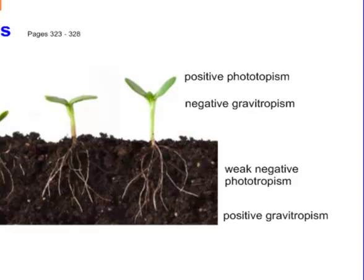The names we have for these: growing towards the light is called positive phototropism — 'photo' of course being the word for light — but they also have negative gravitropism. In other words, the shoot repels the force of gravity.